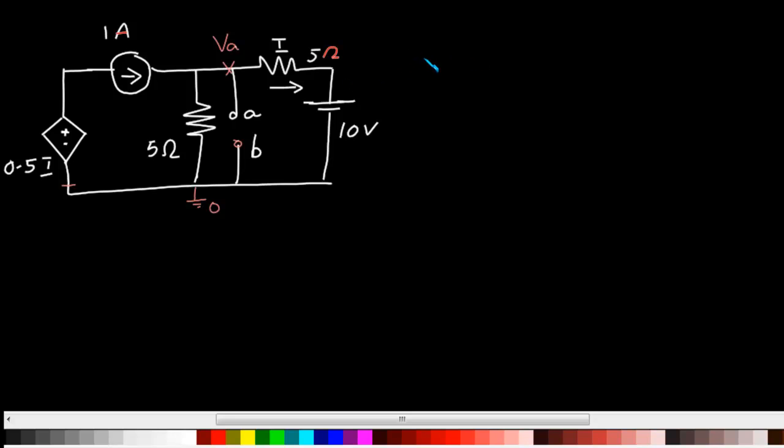Now we can write the KCL at this point. When we are coming into it we have the current entering this node, so minus 1 ampere plus the current leaving this node Va by 5 ohm plus the current going in this direction will be Va minus 10 by 5 equal to zero.